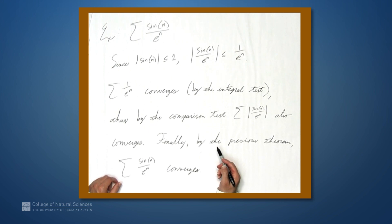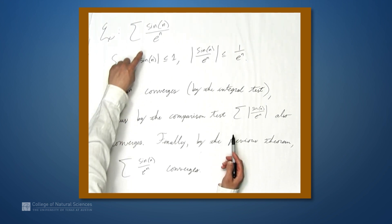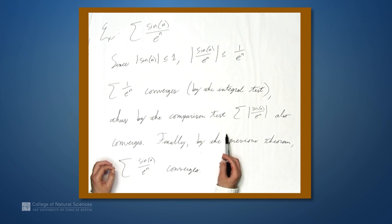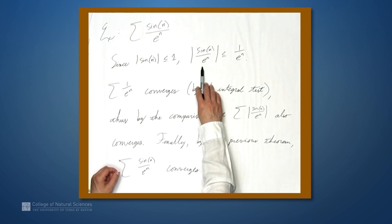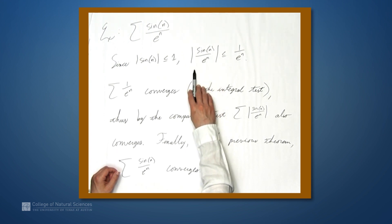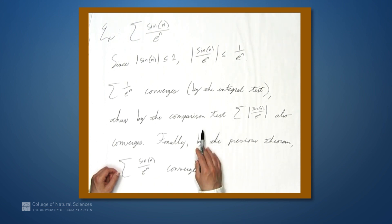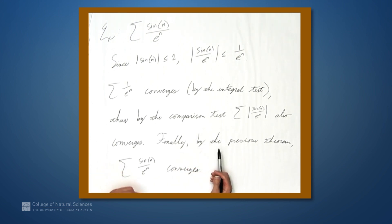One thing to note: we can't apply the comparison test directly to the original series because the original series doesn't have strictly positive terms — it has some positive and some negative. So we have to look at the series with all positive terms by taking the absolute value. Then we can use the comparison test to show that converges, and the previous theorem to show that the original series converges.